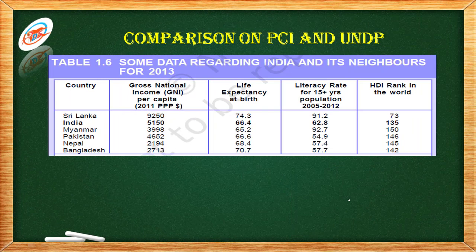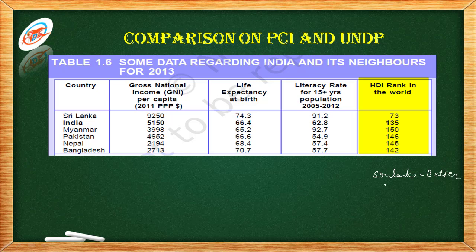In our next slide, we are again going to compare some countries. In the previous slide, we compared some states. If we compare Sri Lanka and India by HDI rank, India's rank is 135, whereas Sri Lanka's rank is 73. It means, according to UNDP, Sri Lanka is better as compared to India.